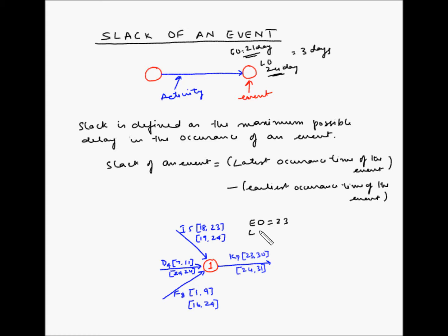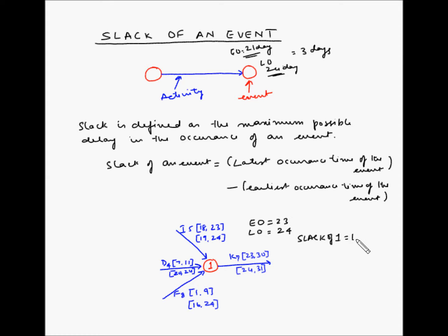Now let us find the latest occurrence time of event 1. The latest occurrence time would be determined by the latest finish times of all three activities. For I the latest finish time is 24, for D it is also 24, and for F it is also 24. So at the 24th day all three activities have been completed, meaning the latest occurrence time is 24. Therefore slack of event 1 equals LO minus EO, which is 24 minus 23, equal to 1 day.